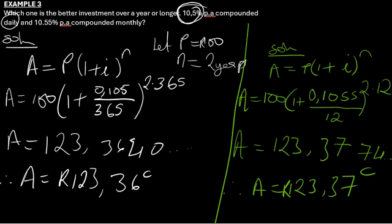So in my conclusion, this 10.55 percent per annum compounded monthly is the best or is the better investment after a year or longer, since after two years I know that I will get R123.37 cents. So the difference between the two is one cent, however.